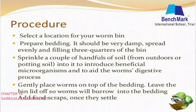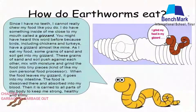The earthworms start converting the waste into compost with the help of gizzards. Gizzards are not teeth — earthworms do not have teeth for grinding their food. Instead, they use specialized structures called gizzards to convert the food into compost. As mentioned before, this compost can be used as a fertilizer or manure. That is another way of effective management of waste.